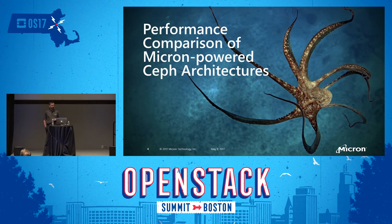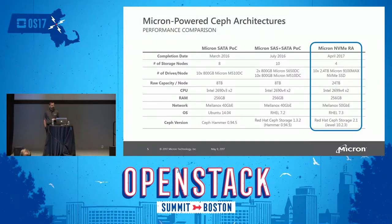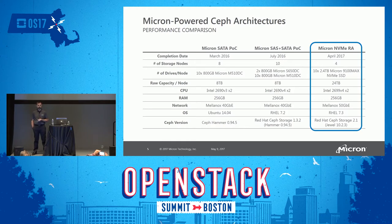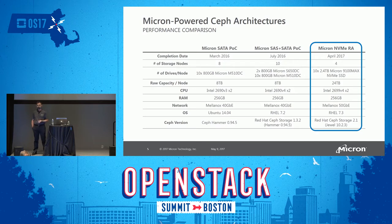Starting with the performance comparison of Micron-powered Ceph architectures. Two years ago I set out with equipment in my lab and a handful of Micron drives to figure out what we can do with Ceph — how to make it work, tune it, and run it. The first architecture was an all-SATA POC: 10 of our 510 DC SATA drives per storage node, Intel 2690 V3 processor, 256 GB RAM, 40 gig Mellanox, Ubuntu 14.04, and Ceph Hammer. The second test was the same but added Micron's SAS S650 DC drives as journal devices, with RHEL 7.2 and Red Hat Ceph Storage 1.3.2, still Hammer.